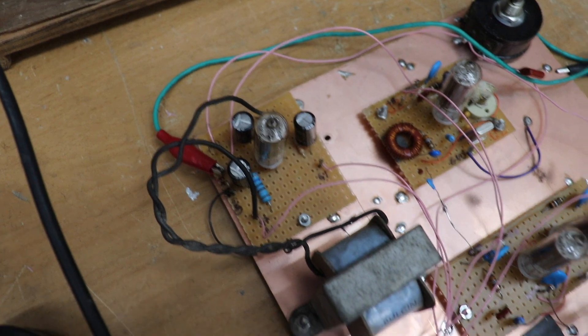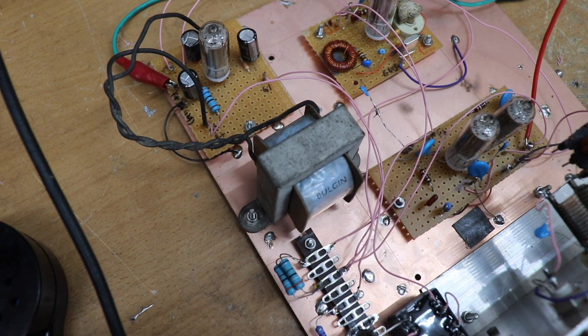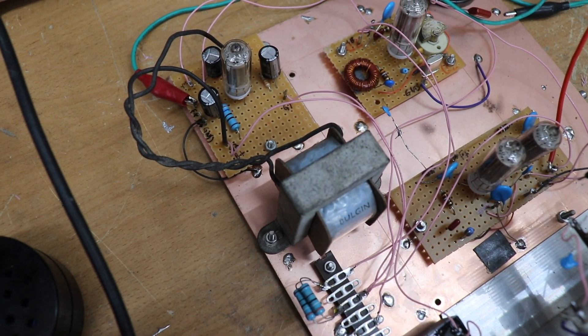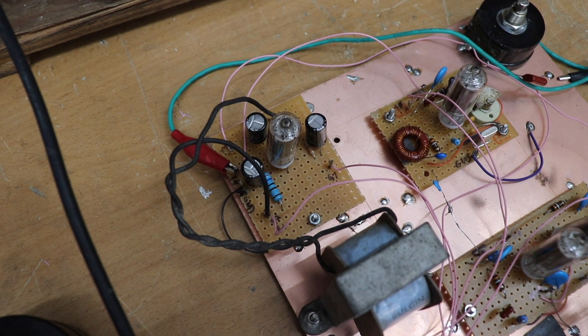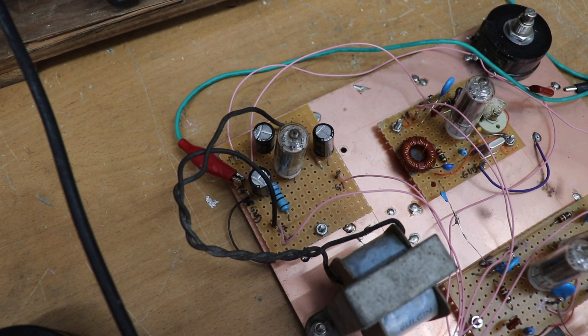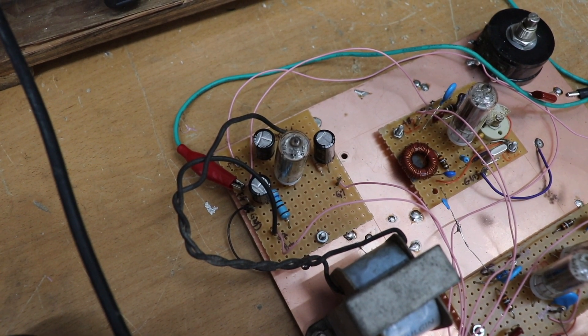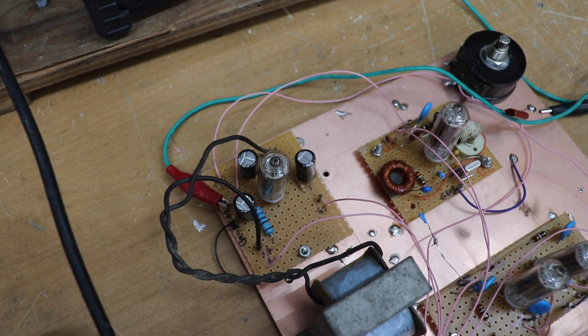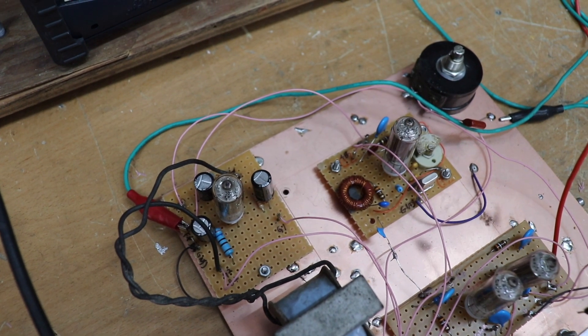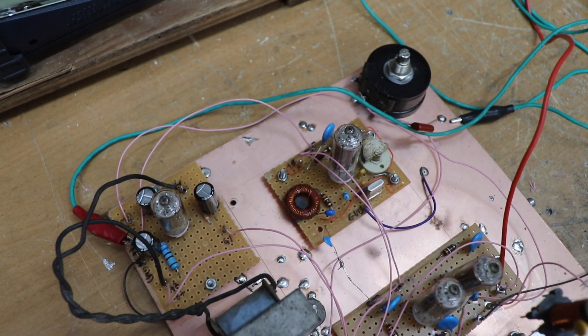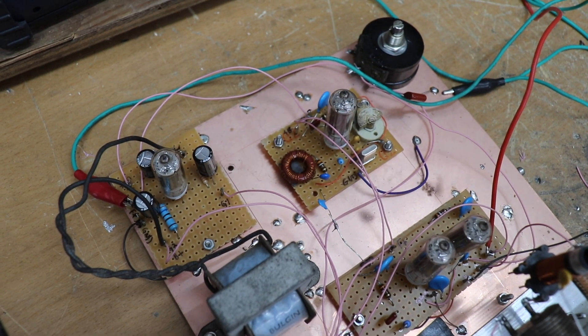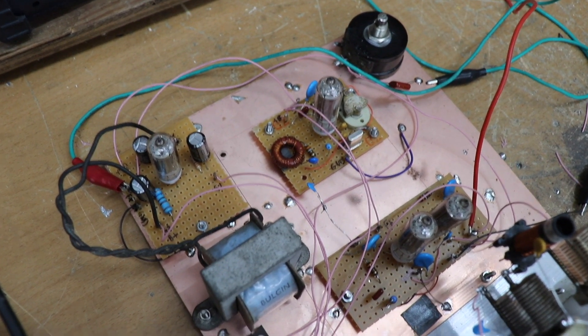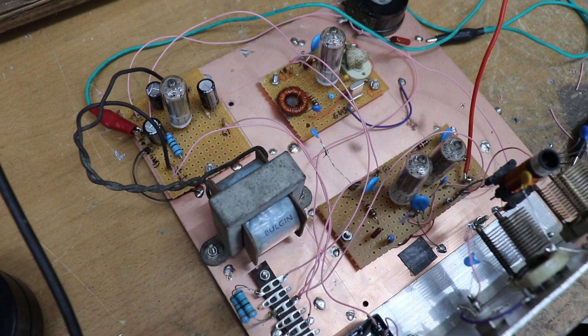So this setup is using screen grid mod. So we've got a big audio choke there. Well big-ish. And we've got the tube there which provides the modulated audio for the screen grid. And the pot at the back just adjusts our screen grid voltage on the PA, effectively. And that's how we get AM.